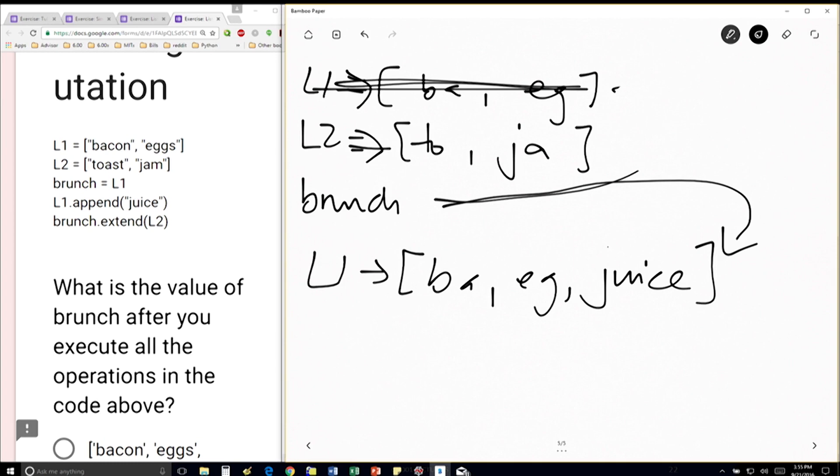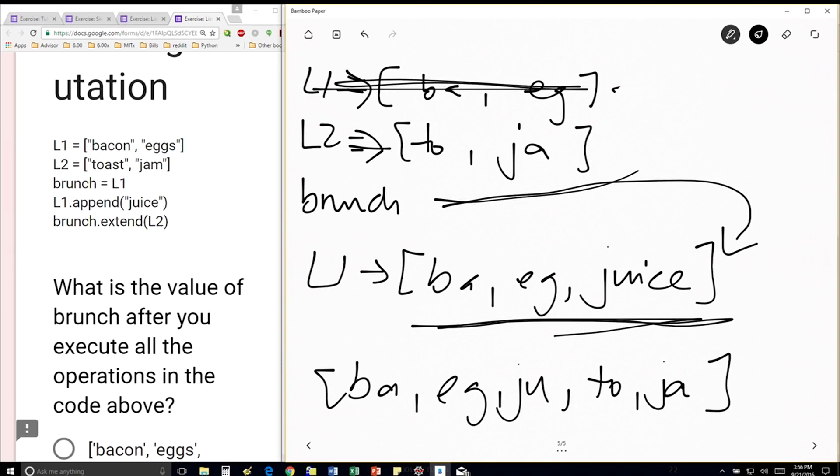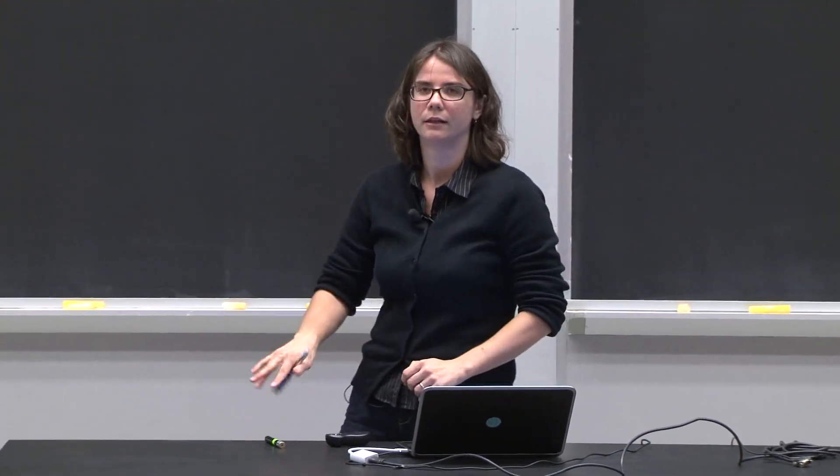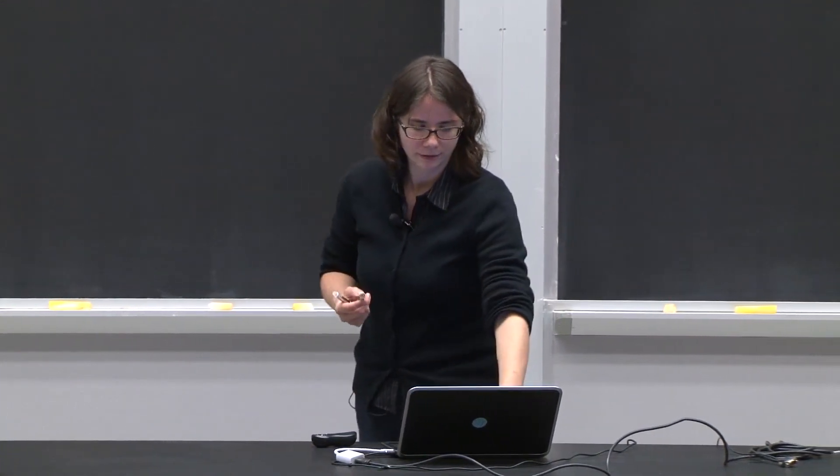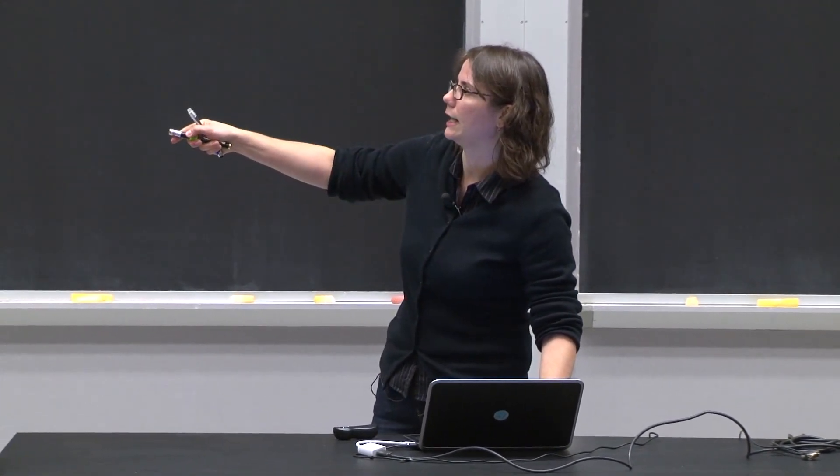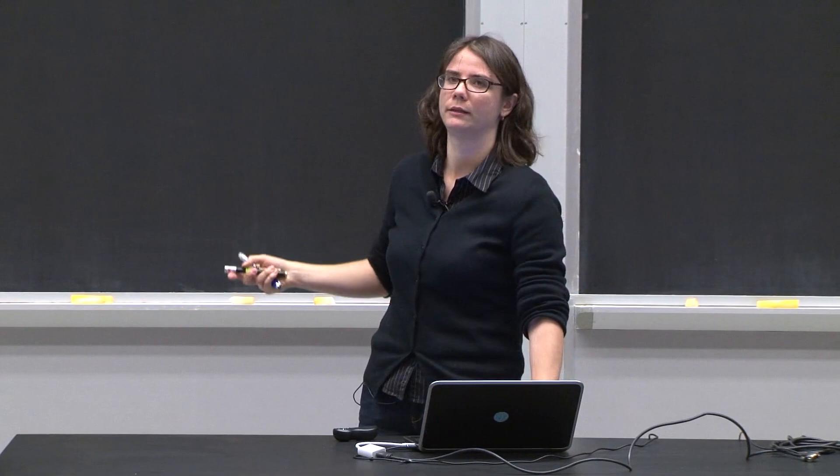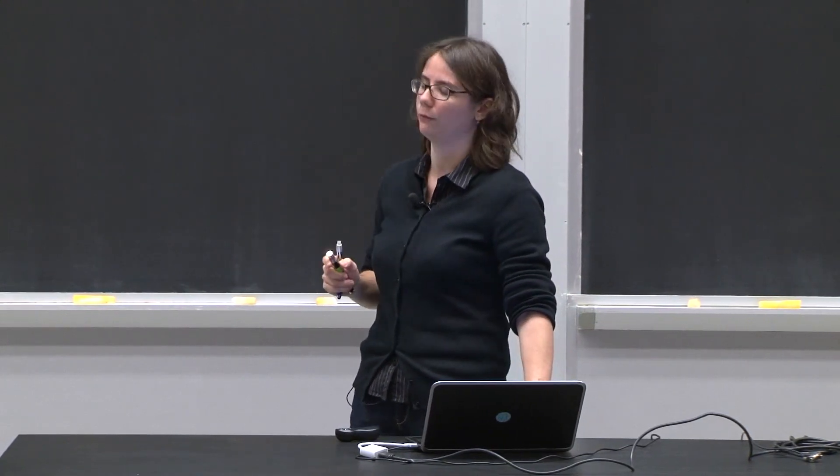So when I do brunch.extend L2, I'm going to take whatever brunch is, which is this part here. And I'm going to extend it by L2, which is toast and jam. So it's just going to contain a large list of those five elements because of this side effect issue, where brunch was pointing to the same thing that L1 was pointing it to.